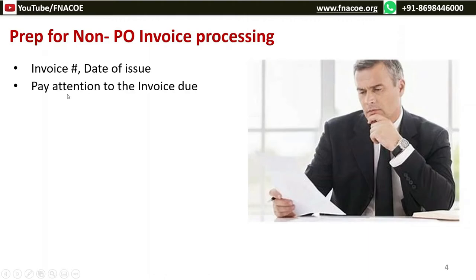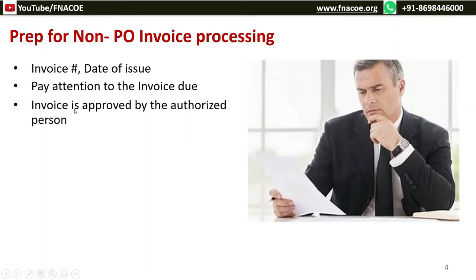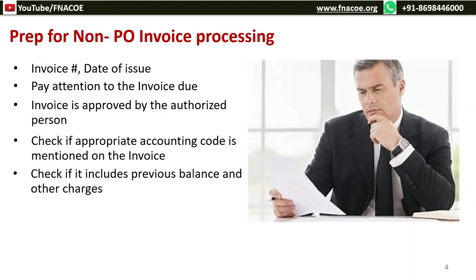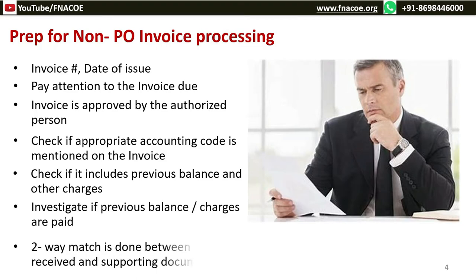Check if the invoice is approved by the authorized person. Check if the appropriate accounting code is mentioned on the invoice — if the wrong accounting code is used, the invoice will go to a different expense code. Check if it includes previous balance and other charges, and investigate whether previous balance charges have been paid. The two-way match is done between the invoice received and the supporting documents. These are the key preparations for non-PO processing.